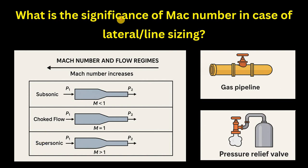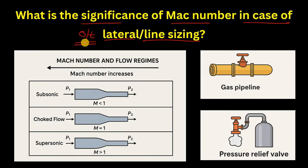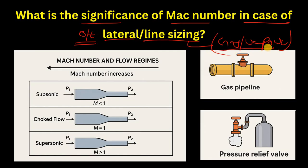In this video we are going to discuss the significance of Mach number in the case of lateral or line sizing — specifically outlet lateral sizing. We will discuss what the Mach number tells us, why we consider it, and what is the meaning of subsonic flow, choked flow, supersonic flow, and hypersonic flow.